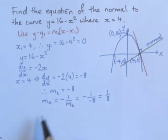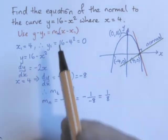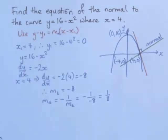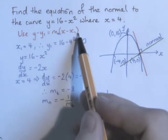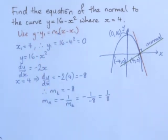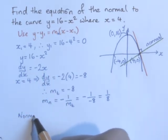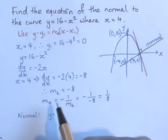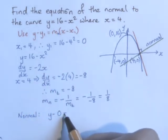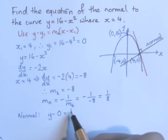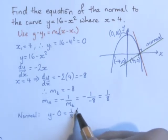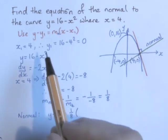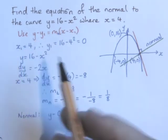Now we've got the gradient of the normal, and we have the x and y coordinates of a point that it goes through. So we can substitute those in to our y minus y₁ equals m times x minus x₁, and get the equation. So we can say that the normal has this equation. So y minus 0 is equal to 1/8, which is the normal's gradient, times x minus 4.